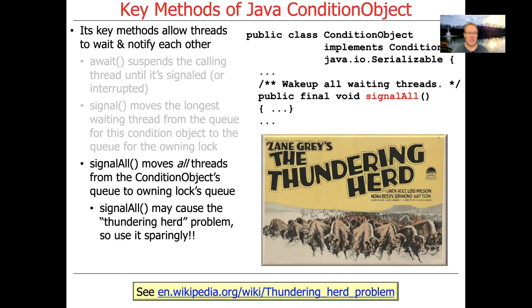Going back to the pizza delivery metaphor: it's like having a bunch of pizza delivery people sleeping in a waiting room, waiting for a pizza and keys to show up. When one pizza or one key shows up, everybody wakes up and they all go clamoring to try to get the pizza and the keys — but there's really only a need to wake one of them up. So be very careful and avoid using signalAll if you can possibly do so. Most of the time you can get by with just using signal.